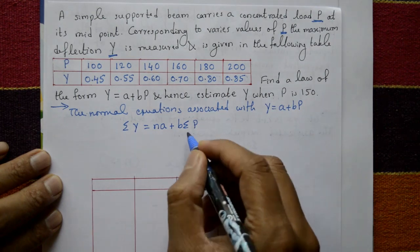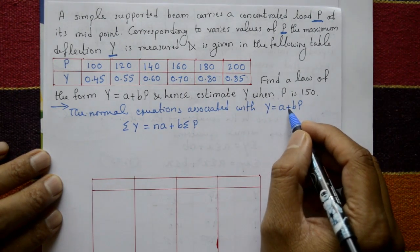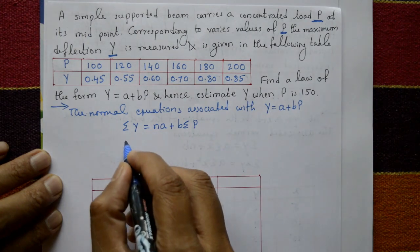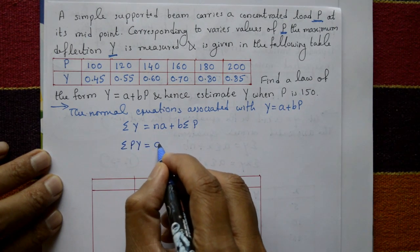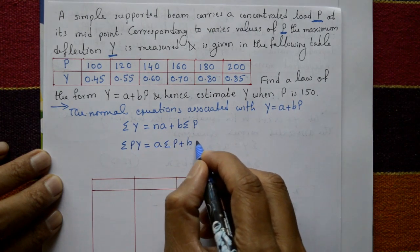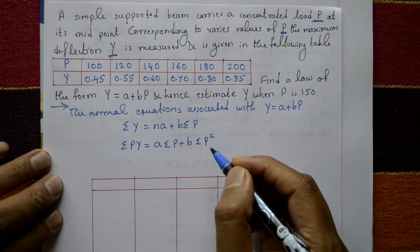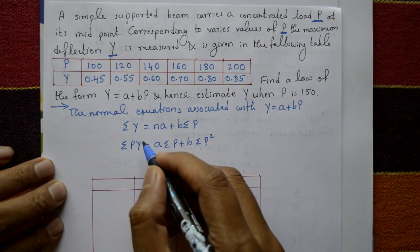We have two normal equations. Again multiply by P in this equation and once again take summation: summation PY is equal to A summation P plus B summation P square.